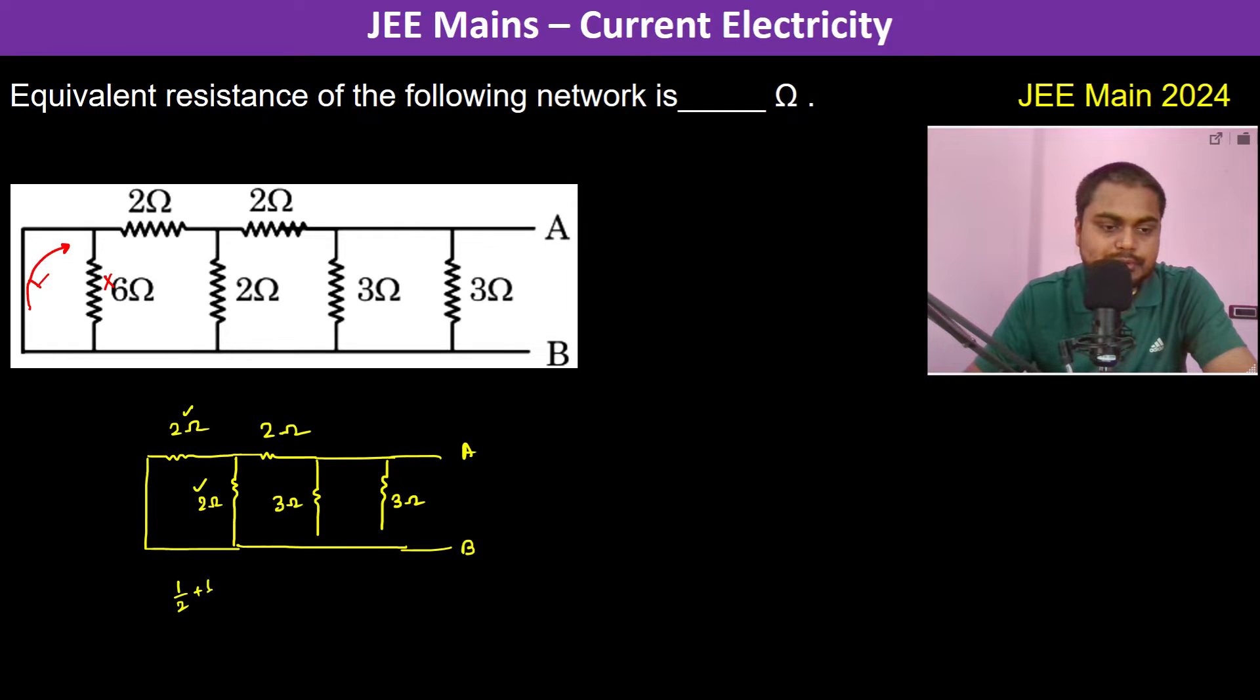1 by 2 plus 1 by 2 is equal to 1 by R, so therefore it becomes 1. This is 1 ohm. So this again translates to 2 ohm with either 1 ohm.